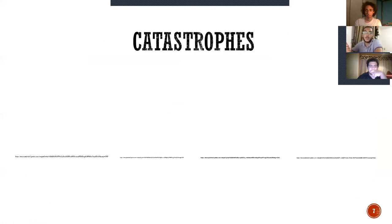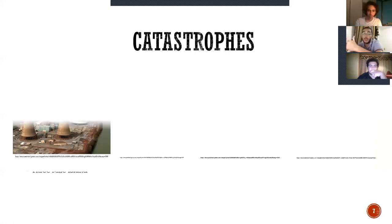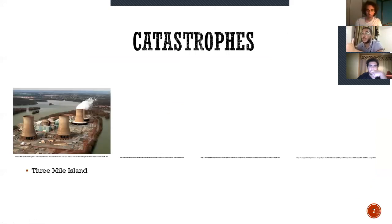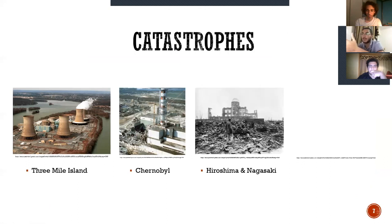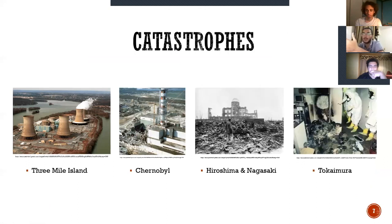Such dilemmas have led to major catastrophes known since mankind. Some of them are Three Mile Island, Chernobyl, Hiroshima and Nagasaki, and Tokaimura.